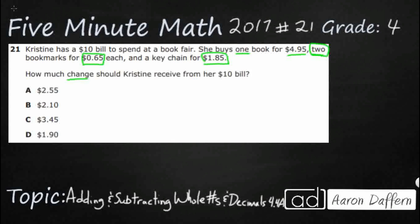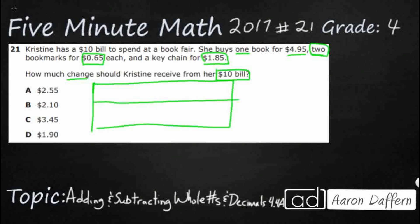So we're looking for change. This is going to be an interesting problem because our total is going to be right here — our total is $10. Let's see if we can represent this with a strip diagram to visually see what we've got working here. So our total in our part-part-part-part-part-whole is going to be that $10 right there. That's how much she has to spend.